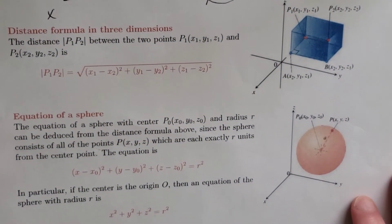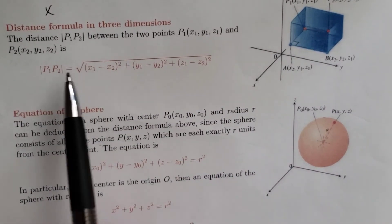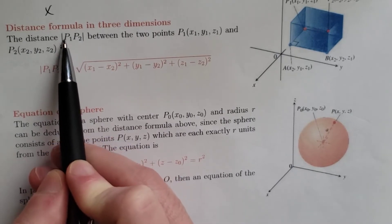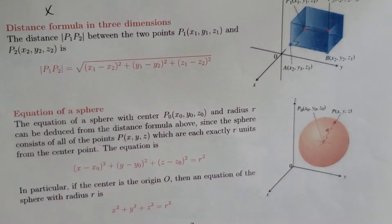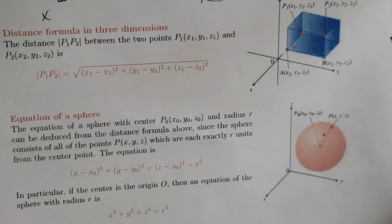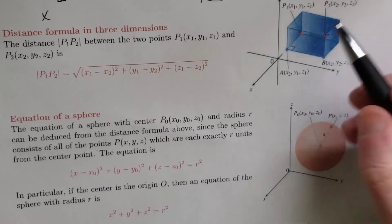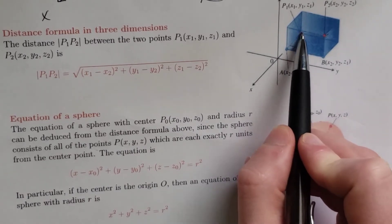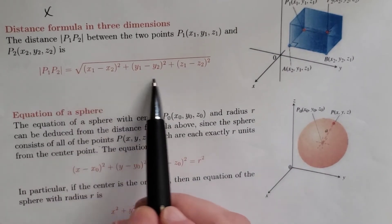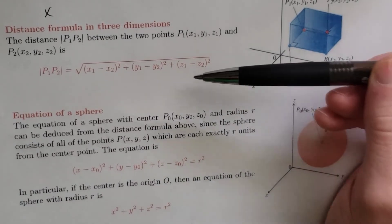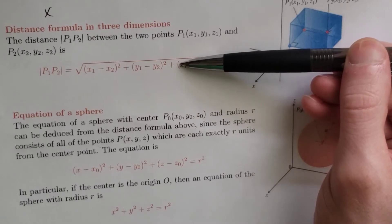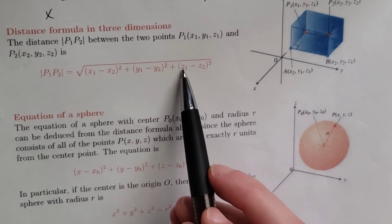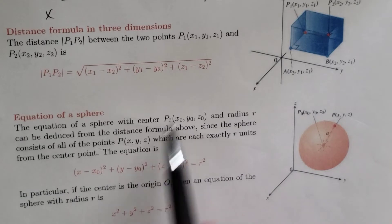A few things to quickly discuss: the distance formula in three dimensions uses notation that looks like the absolute value of P1P2, which really means the distance or length from point P1 to P2. You have a picture on the right showing P2 at the top corner and P1 at the back bottom corner of a rectangular prism. The formula should look very familiar — it is the two-dimensional distance formula with an additional term: plus z1 minus z2, quantity squared, all under the square root.